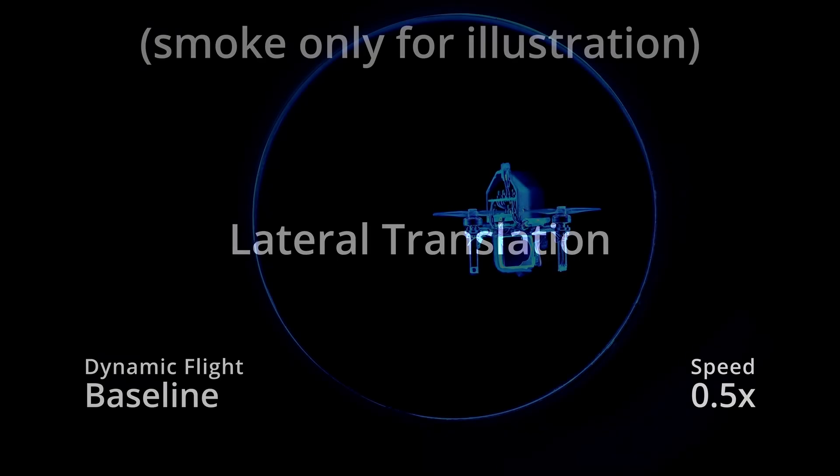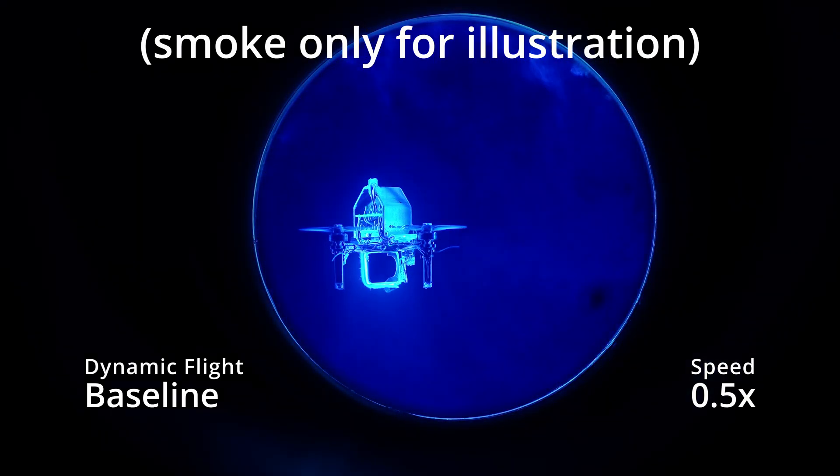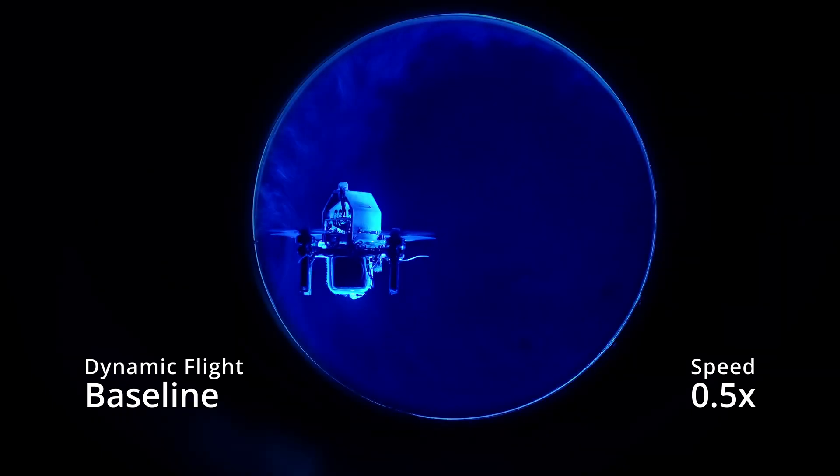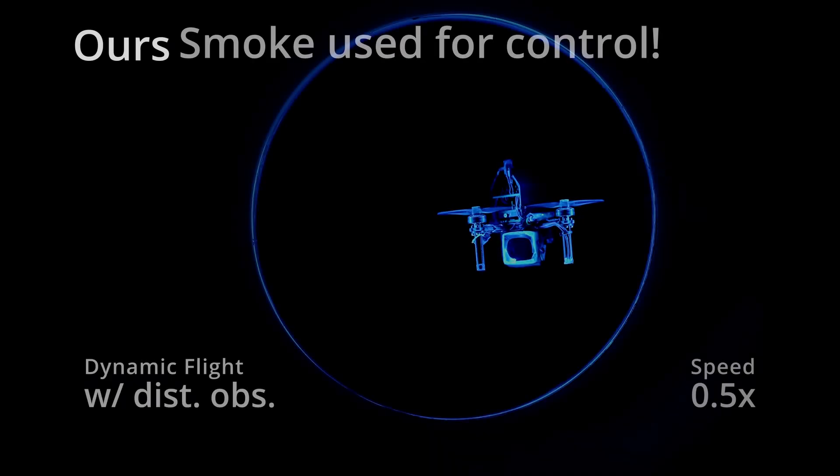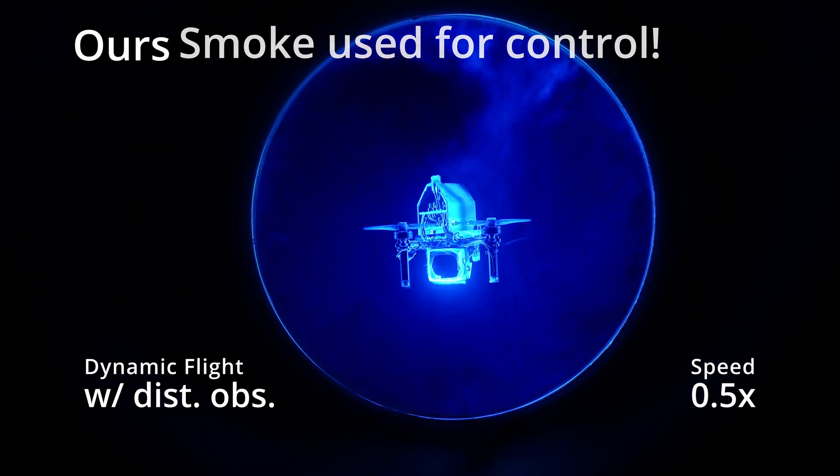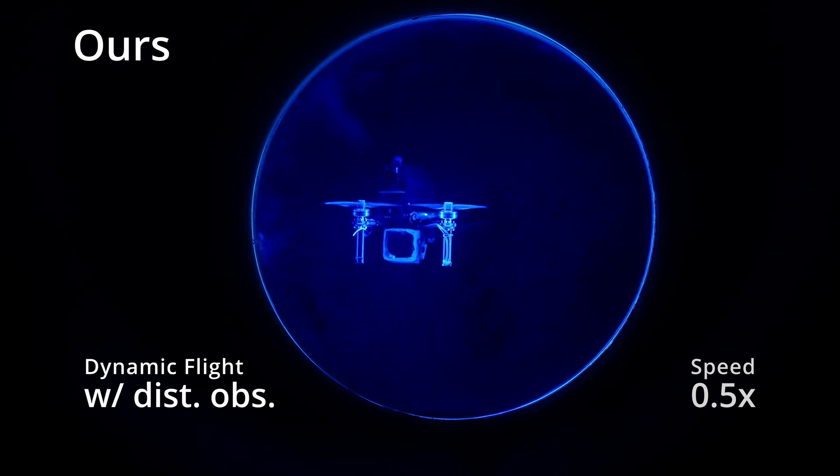While our method shows some improvements, it is dynamic scenarios where the difference is most notable. When flying from one side of the pipe to the other, the circular flow reverses direction at some point. This scenario is especially difficult and can easily lead to crashes with the wall. Only our method is able to perform this maneuver accurately because it actually measures when the flow reverses direction and counteracts the disturbance effectively.